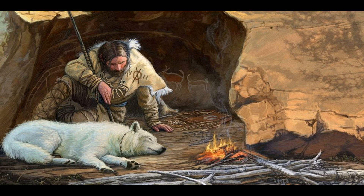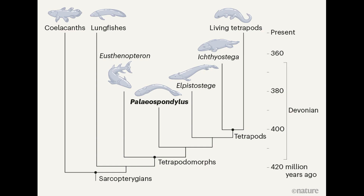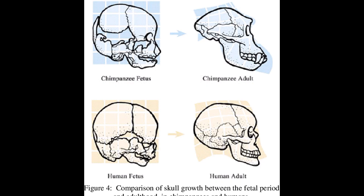Modern lungfish are also neotenic, not producing enough thyroid hormones to stimulate their metamorphosis. Fascinatingly, a Middle Devonian fossil fish discovered in 1890 called Paleospondylus has been recently described as a highly pedamorphic tetrapodomorph, putting it in the same clade as Eusthenopteron, Panderichthys, and the tetrapods.